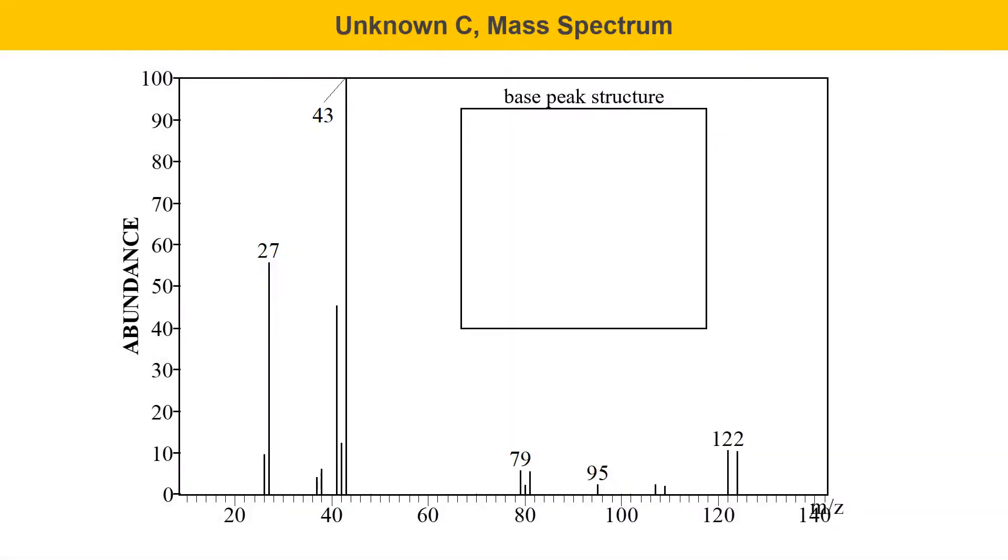Now, moving on to unknown C. Here's the mass spectrum of unknown C, and something significant here is the molecular ion region. There are 2 peaks here of roughly equal intensity. The first one is at 122, and the second one is at 124. You have to read the X scale carefully to get this, but each tick mark on the bottom is actually 2 mass units. So, 2 peaks of equal intensity separated by 2 mass units. That's trying to tell you something significant.